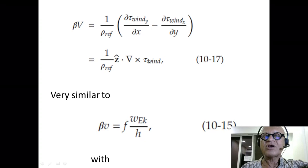Because, of course, curl of wind is directly related to Ekman pumping. That's what determines the cyclonic anticyclonic gyre. That's what determines the Ekman pumping or Ekman suction.